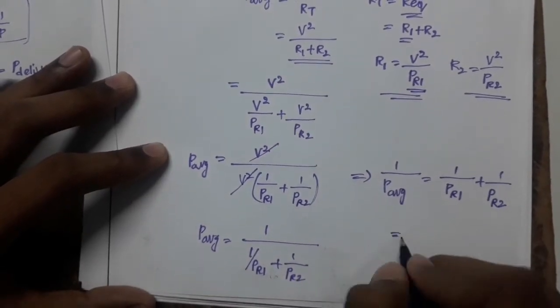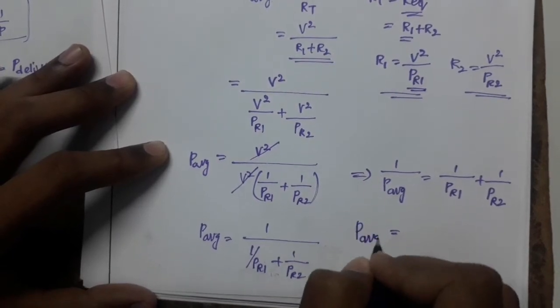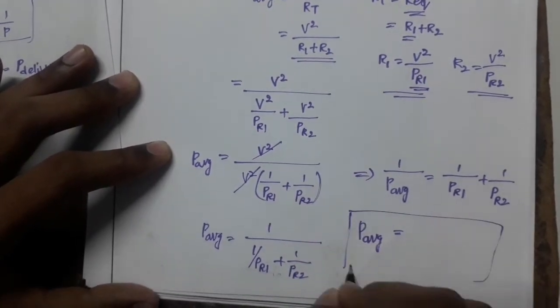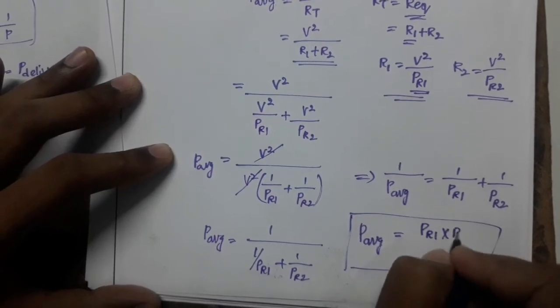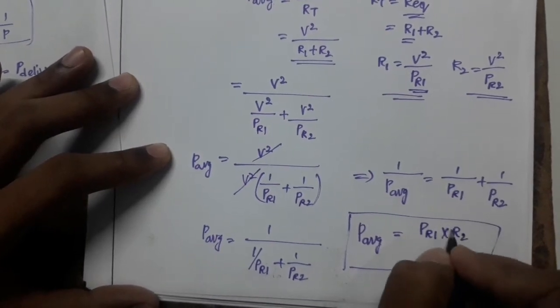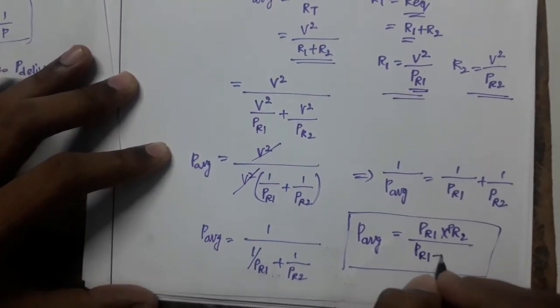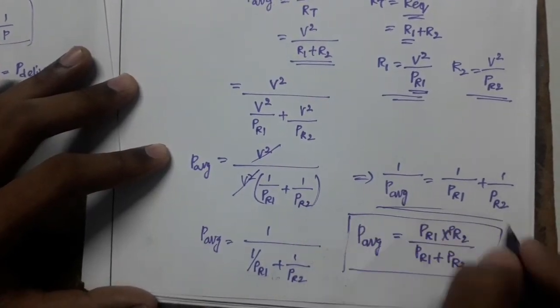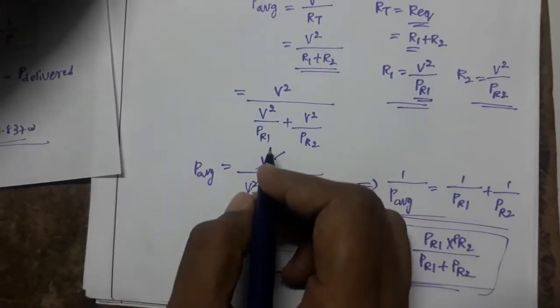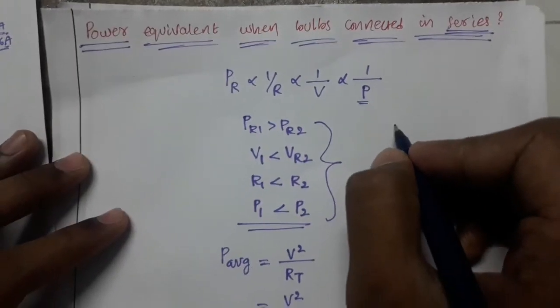So the equivalent power formula for series connection is P_equivalent = (PR1 × PR2) / (PR1 + PR2). I have derived these relations from the previous problem.